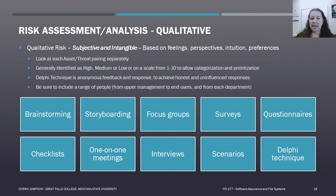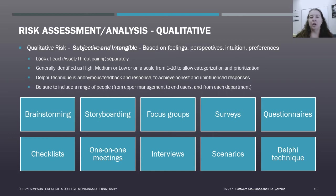For qualitative analysis, we typically identify each asset-threat pairing risk as high, medium, or low — or sometimes on a scale of 1 to 10. We need to prioritize and categorize risks so we know which ones to mitigate. If social media reputation risk is considered serious, we need to come up with a mitigation or control to address it.